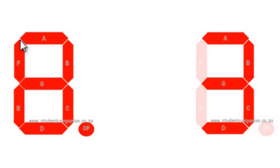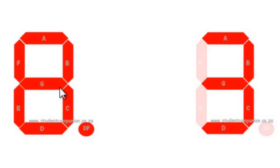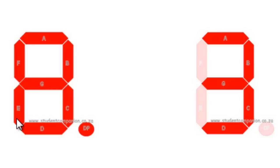For example, if I want to display the letter B, I can switch on segments C, D, E, F, and G. If I want to display the letter F, then segments A, F, G, and E should be on.